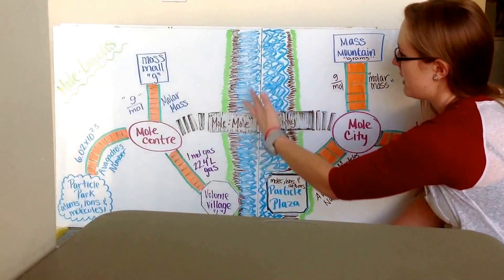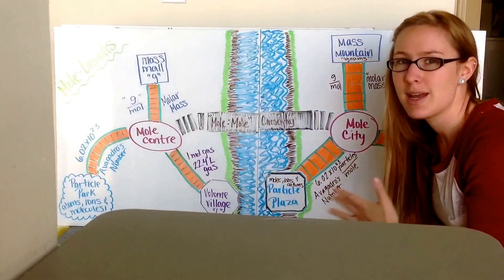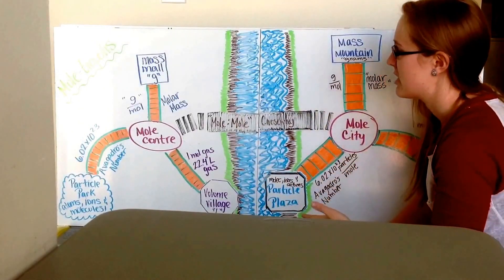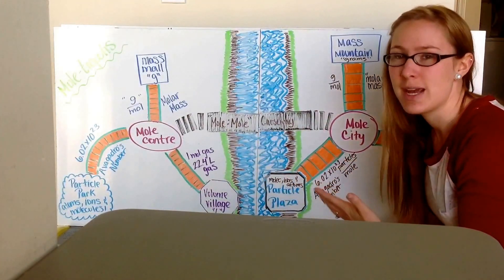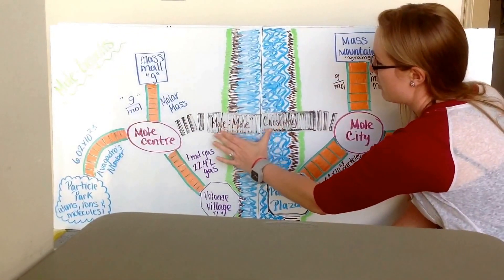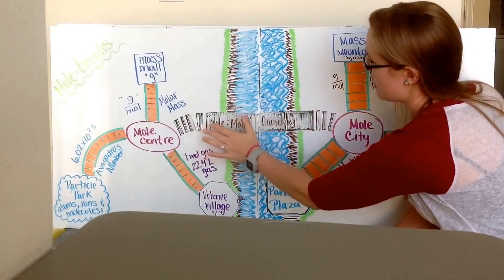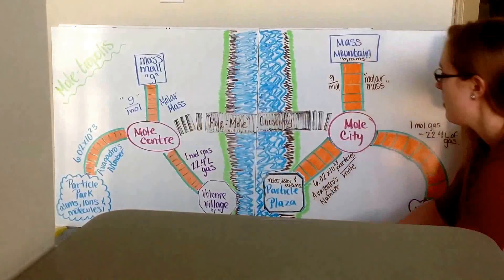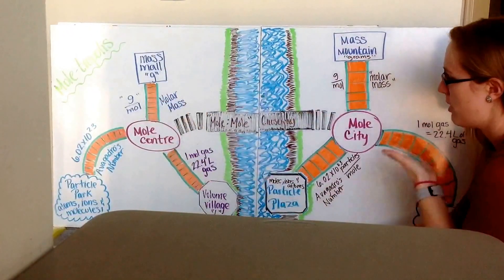But notice that they're separated by this river. This is like the plus sign, the yield sign in your chemical reaction. They're separated. You can't just go from one to the next just as you please. You have to use our mole-to-mole ratio, which we're showing as a causeway, a big bridge, connecting the two mole cities to each other, creating one large moletropolis.